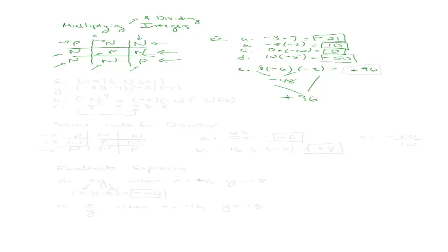So my answer is positive 96. What I did was figure out the signs first: positive times a negative gave me a negative, and negative times a negative gave me a positive. You can do all your signs first and then worry about the multiplication. Here are some for you to try: negative 9 times negative 2 times negative 1, and also negative 3 times negative 4 times negative 5 times negative 1.